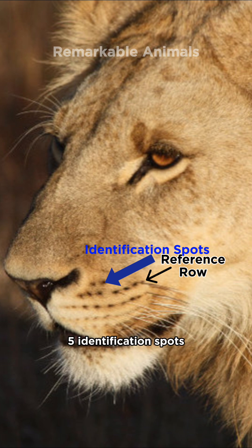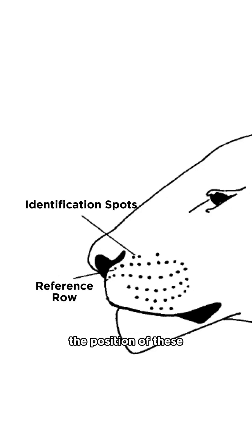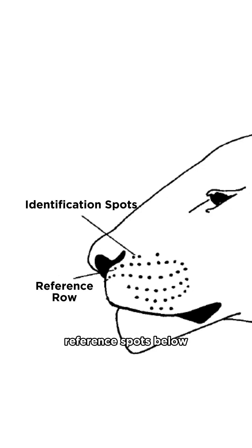There can be up to five identification spots. The position of these identification spots in relation to the reference spots below are used to confirm an individual's identity.